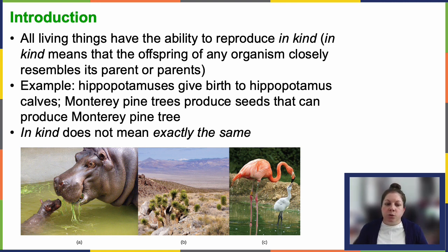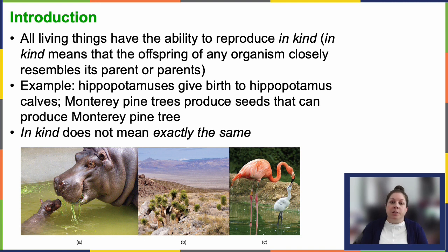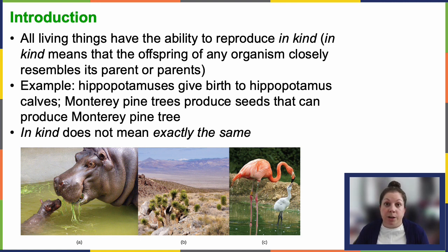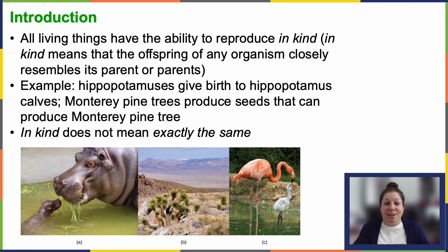Sexual reproduction — specifically meiosis followed by fertilization — is going to introduce variation among the offspring. It's going to contribute to the evolutionary success of sexual reproduction. This is where we get all that variety. We mix up the traits we got from our own parents, and then we combine those with the other genetic parent to create this unique offspring. So that's what we're going to be looking at for the next few videos. I'll see you in the next one. Bye-bye.